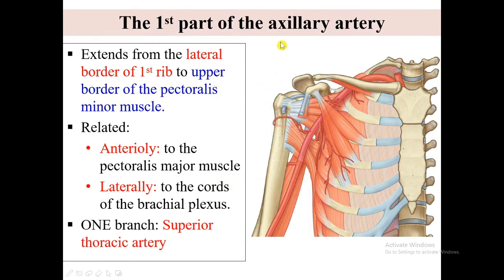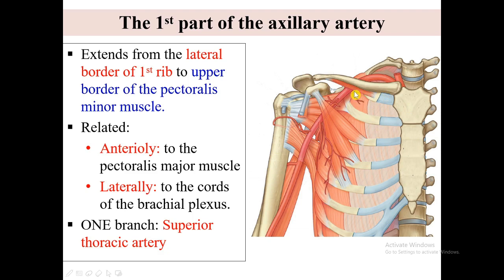The first part of the axillary artery extends from the lateral border of the first rib to the upper border of pectoralis minor. Anteriorly it is related to the pectoralis major muscle and lateral to the cords of the brachial plexus. The first part has one branch, the superior thoracic artery — a small artery originating from the anterior surface of the first part, supplying the upper region of the medial and anterior axillary wall.